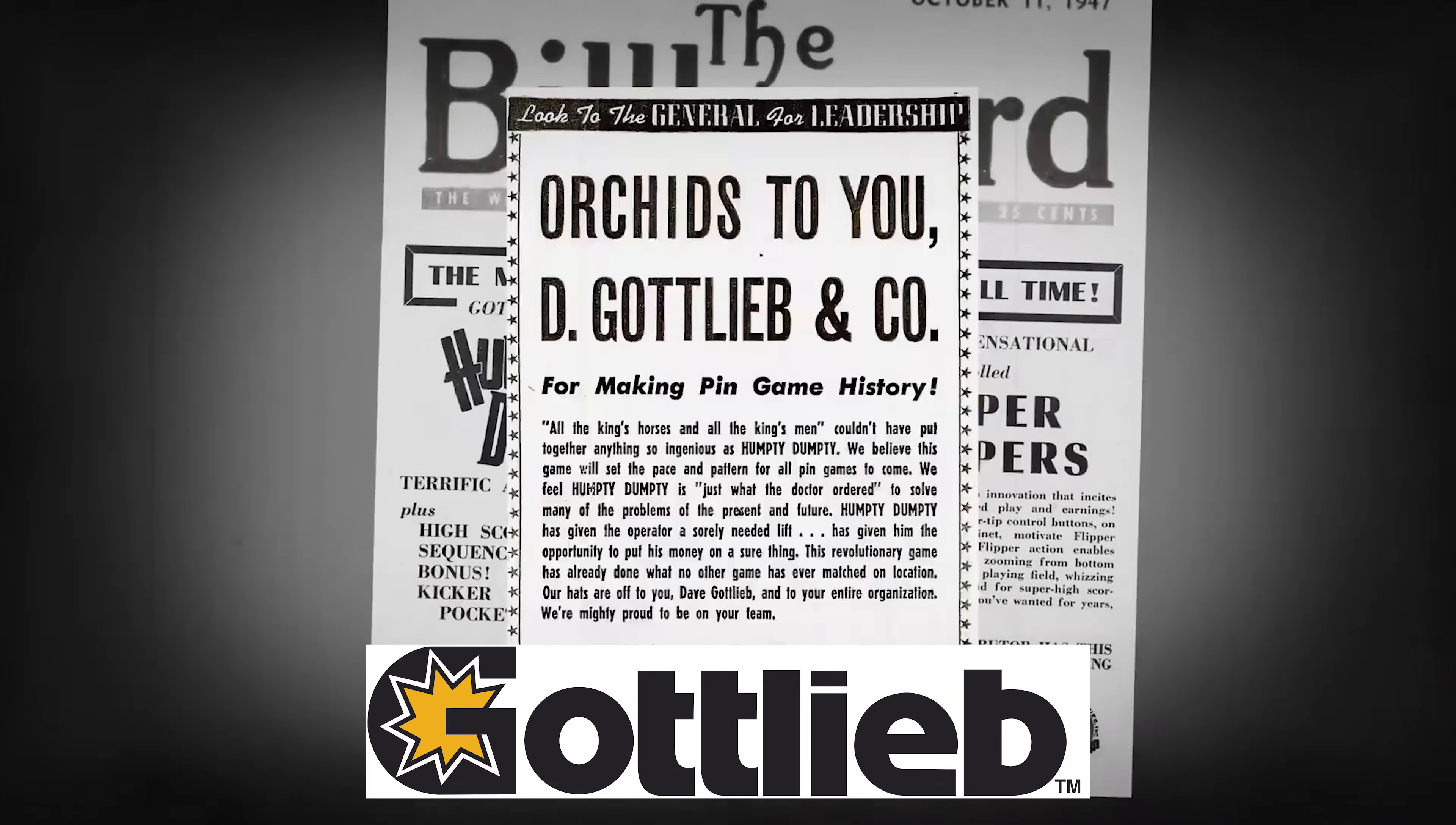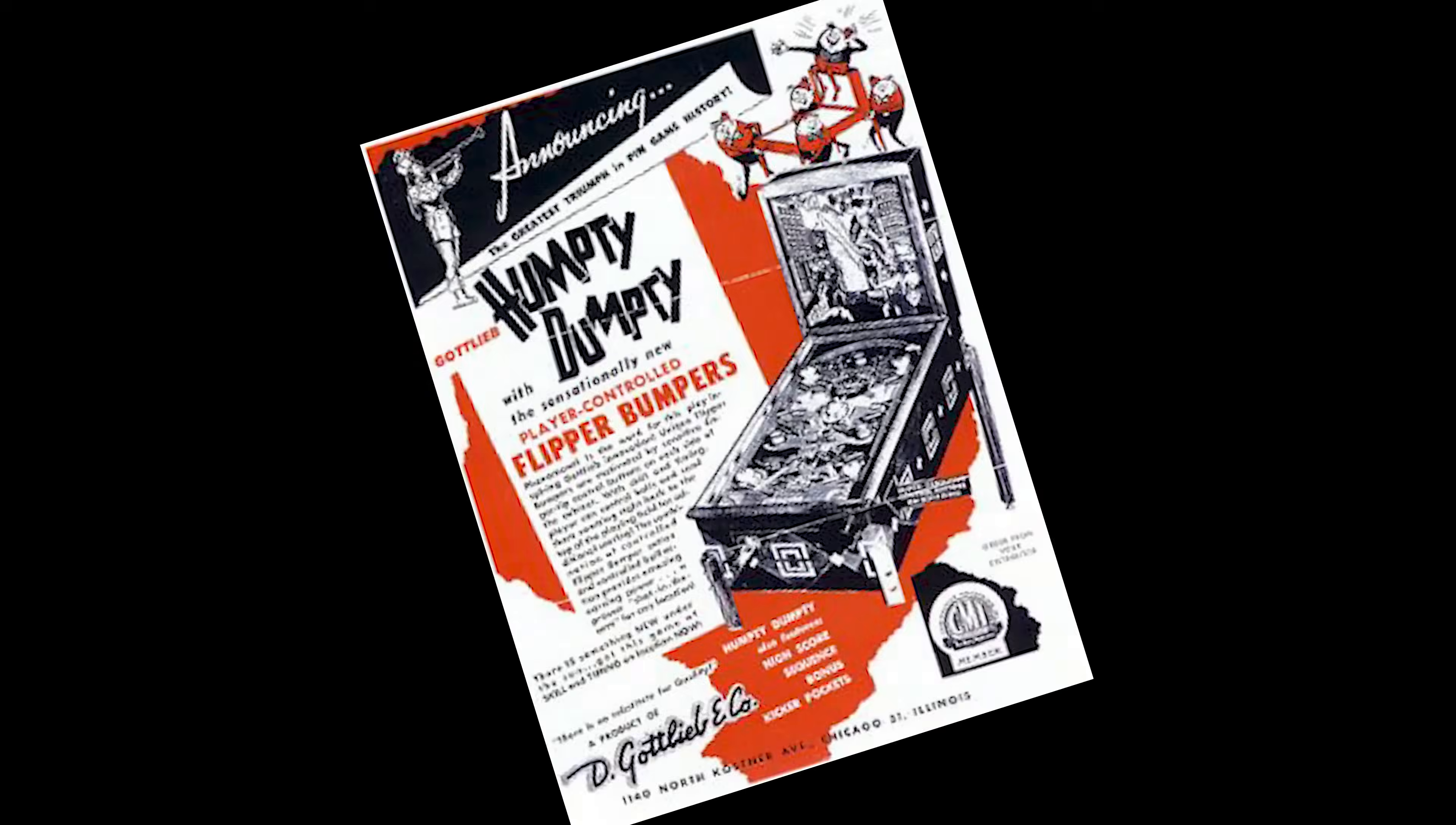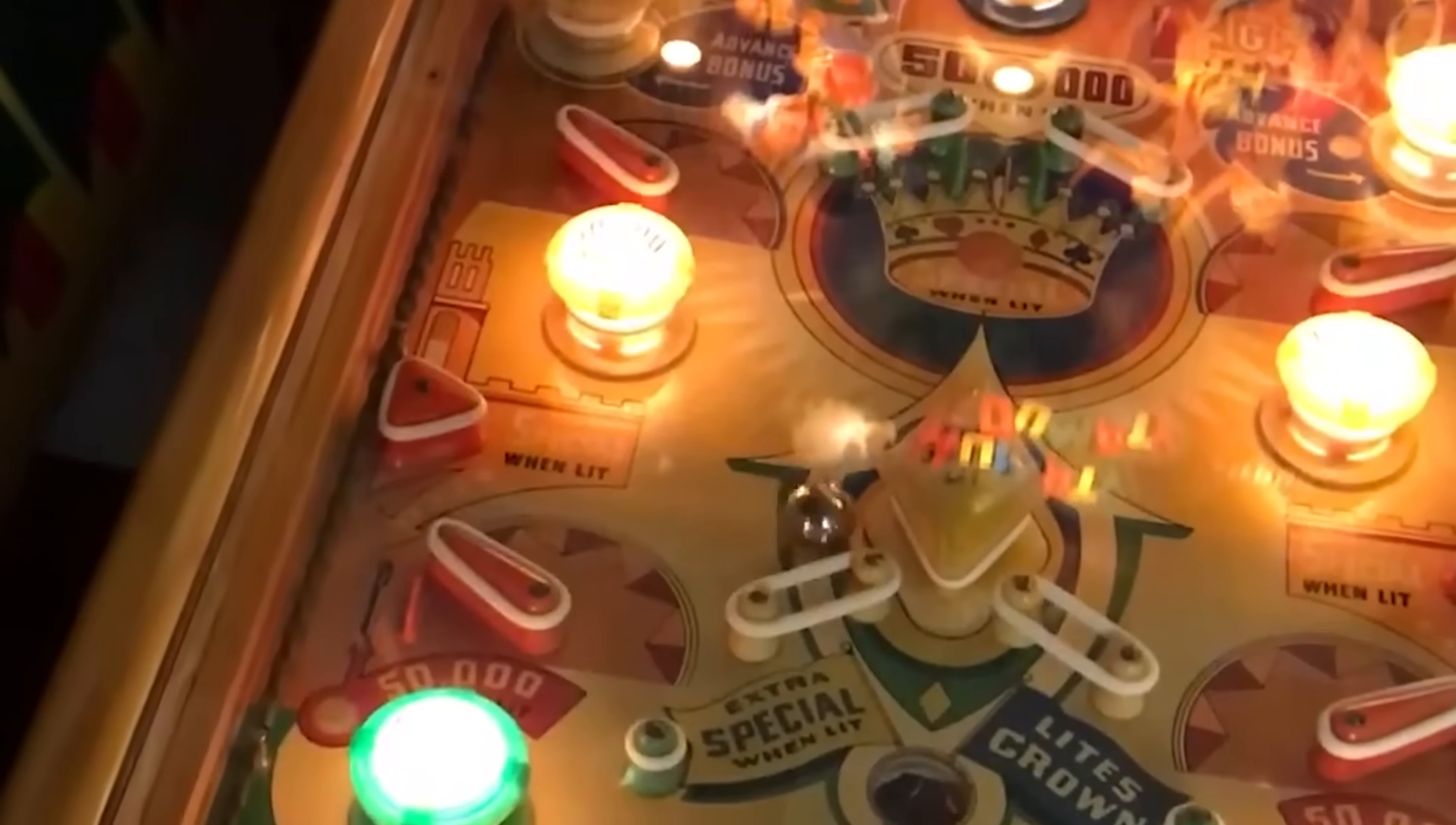It was Gottlieb, back in 1947, thanks to an idea by Harry Mabbs, that introduced the very first game with player-controlled flippers. Humpty Dumpty. The quick and snappy motion of those little bats gave players direct control over the ball, a true revolution at the time compared to the purely passive mechanical games.